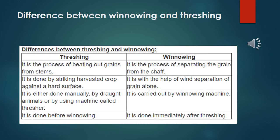Now we are discussing the next question: differentiate between threshing and winnowing. Point one: threshing is the process of beating out grains from the stem. Winnowing is the process of separating the grain from the chaff. Point two: threshing is done by striking the harvested crop against a hard surface. Point two for winnowing: it is done with the help of wind to separate the grain.